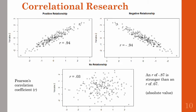Scatter plots are a good way to easily see what type of relationship exists between two variables. A positive relationship, shown on the top left, means that increases in one variable are related to increases in the second variable. Values in a strongly correlated positive relationship hug tightly around the diagonal and move upward from the bottom left to the top right.